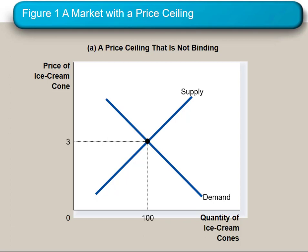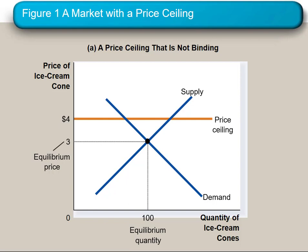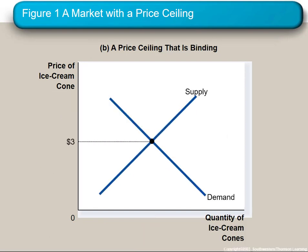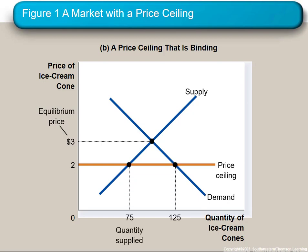Here's an example of a non-binding price ceiling: if the price is $3 per unit and you set the ceiling at $4, the price already has to be less than $4, and it already is — so nothing happens. In the case of a binding price ceiling, suppose the price is $3 per unit and the government says you can't charge more than $2. Then buyers and sellers have to change their trading price, and the law of supply and demand tells us suppliers will supply less while buyers want to buy more. As shown in the graph, this leads to quantity demanded being larger than quantity supplied at the ceiling price — what we call a shortage or excess demand.